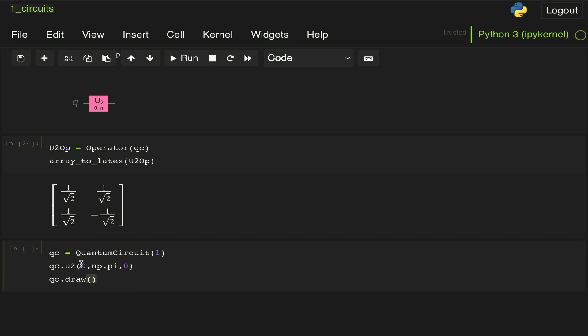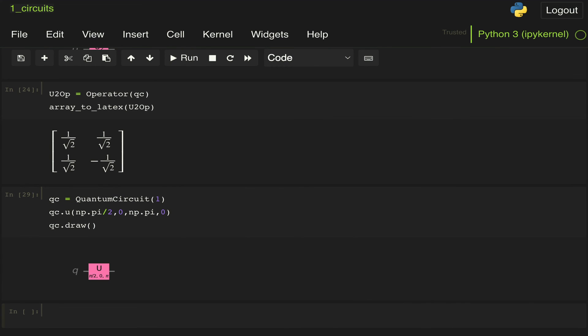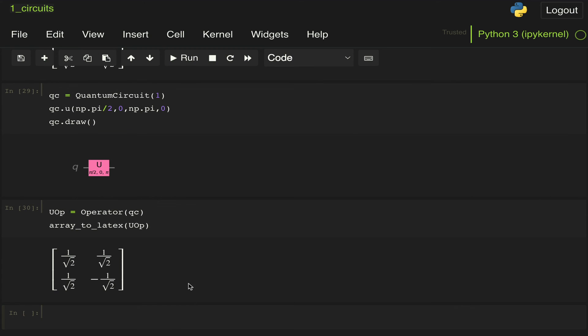We can do the same thing for the general U operator. I won't do the U3 because it's just the same. So we'll just do an angle of pi over 2 here and we get the gate for the U gate, and then again we can do the same for our U operator for the new quantum circuit. Here we can see that it does in fact look like a Hadamard gate.